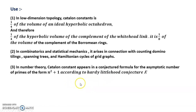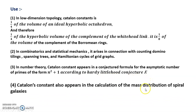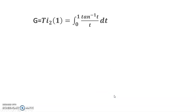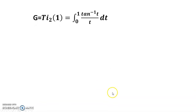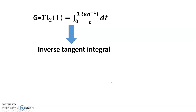According to the Hardy-Littlewood conjecture, the Catalan constant also appears in the calculation of the mass distributions of spiral galaxies, so it is also used in astrophysics. We also have G equals Ti2(1), which equals the integral from 0 to 1 of arctan(t) divided by t, implying it is the inverse tangent integral.